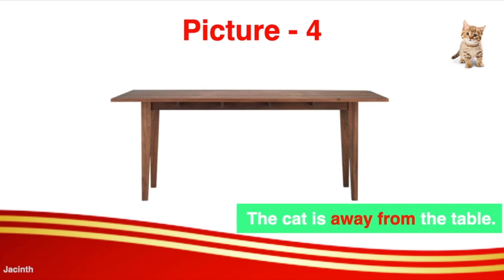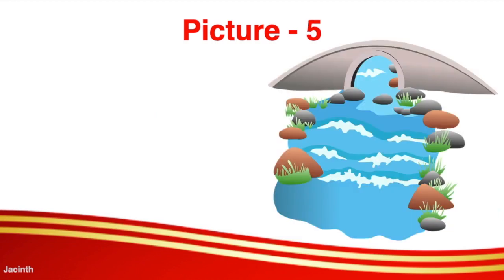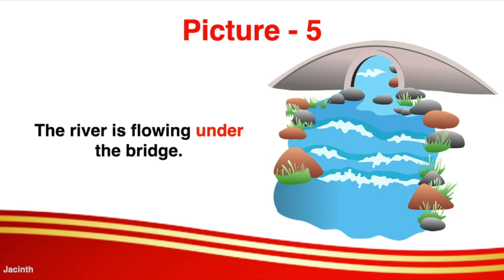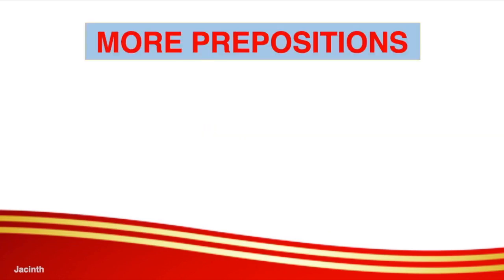Let us see the next picture. What can you see here? The river is flowing under the bridge — not over the bridge, but under the bridge. So the river is flowing under the bridge. Let us learn more prepositions.